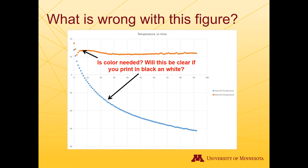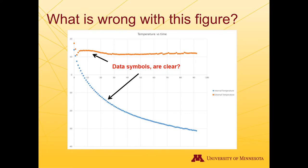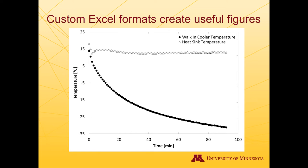Excel also makes use of color, which is not always the best thing, so we may have to change to black and white. The color is a redundant feature here because there are differences in the symbols, but if you are printing in black and white, you want to make sure that you format it appropriately. At this point, we're going to shift over to Excel and go through the formatting process to meet the basic standards for this course.